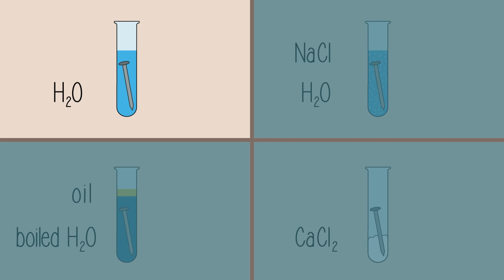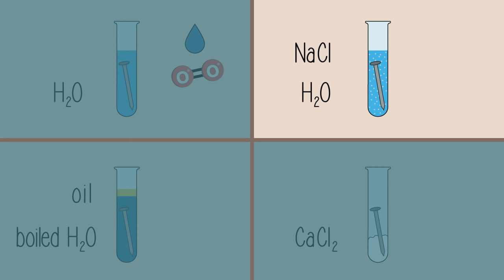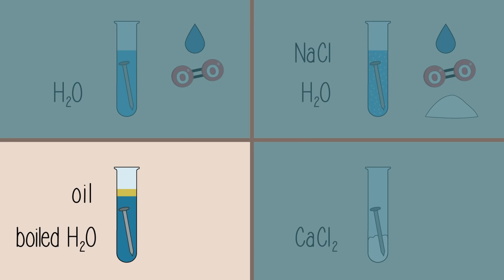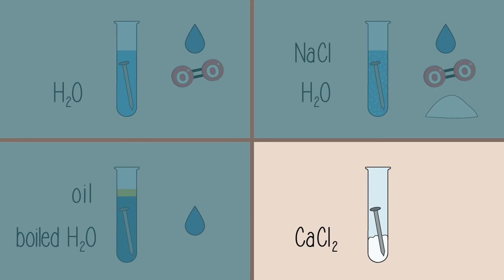So in the first test tube, the nail is exposed to oxygen and moisture. In the second test tube, the nail is exposed to oxygen, moisture, and salt. In the third test tube, the nail is only exposed to water. In the fourth test tube, the nail is exposed only to oxygen.